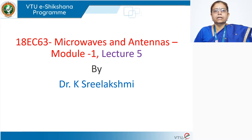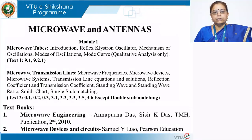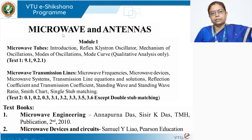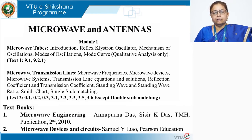Today let us look at the contents of Lecture 5. In the previous lectures of this module, we have two portions: microwave tubes and microwave transmission lines. In Lectures 1 and 2, we saw conventional vacuum tubes, their limitations, and why they are not suitable for microwave frequencies. In Lecture 2, we covered the construction and working of the reflex klystron oscillator. In Lecture 3, we moved to microwave transmission lines, their frequency bands and utilities. In Lecture 4, we looked at transmission line equations and their solutions.